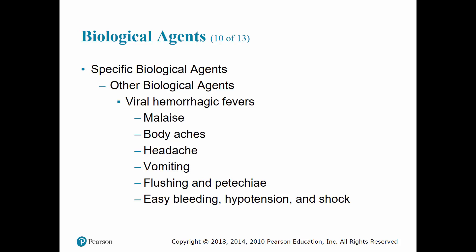Viral hemorrhagic fevers cause malaise, body aches, headache, vomiting, flushing of the face and chest, edema, and petechiae or small pinpoint hemorrhages. The patient may also have easy bleeding during the early stages and hypotension and shock in the late stages.